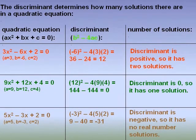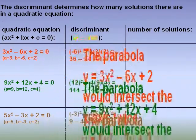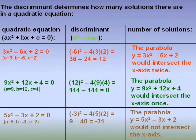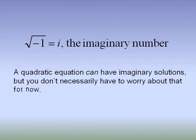The discriminant determines how many solutions there are in a quadratic equation. If you draw it on a graph, how many times does the parabola pass through the x-axis — those are the roots. If it's positive, there are two solutions. If it's zero, there's only one solution. If it's negative, there are no solutions in the field of real numbers. But that doesn't include imaginary numbers, which don't come until algebra 2.